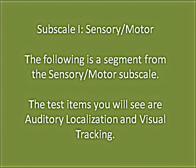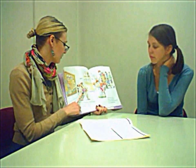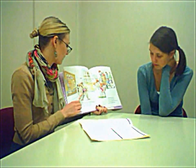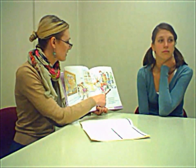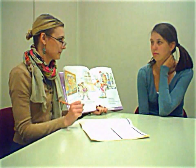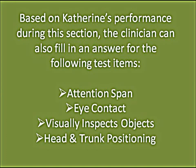The following is a segment from the sensory motor subscale. The test items demonstrated are auditory localization and visual tracking. The clinician says: 'Katherine, let's look at the pictures in this book. Here's a little girl in a tutu. Here's a puppy. Katherine, can you follow the pencil from the little girl to the puppy?' Based on Katherine's performance, the clinician can also fill in answers for attention span, eye contact, visually inspects objects, and head and trunk positioning.